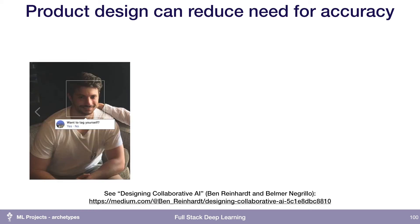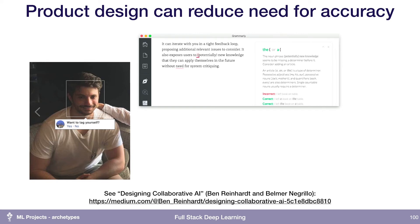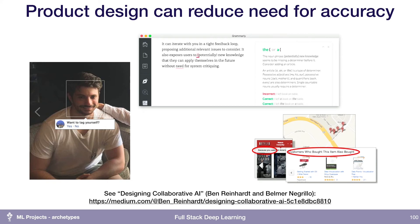Good product design is very underrated in machine learning. Some examples I like: Facebook automatically suggesting a tag but asking if you want to tag yourself — they get a label from that. The Grammarly tool automatically suggests grammatical changes in a way where the product design makes this helpful even if it's sometimes wrong. And Netflix's recommendation system often tells you why it's making those recommendations, allowing you to provide feedback that makes them better.